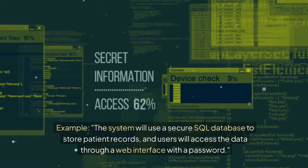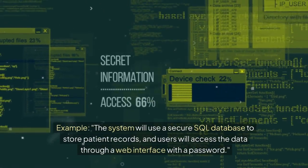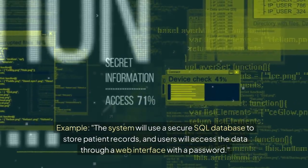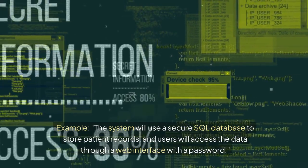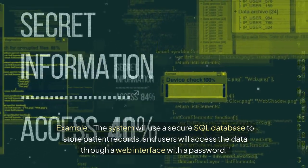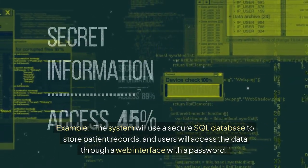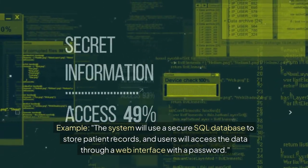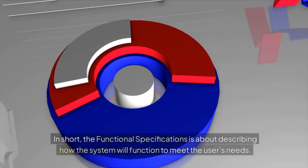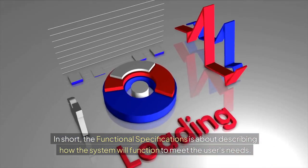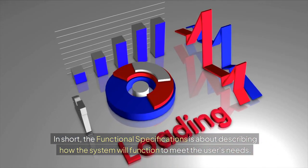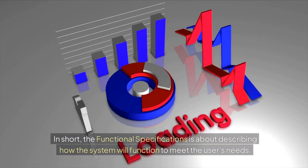For example, the system will use a secure SQL database to store patient records, and users will access the data through a web interface with a password. In short, the Functional Specifications is about describing how the system will function to meet the user's needs.